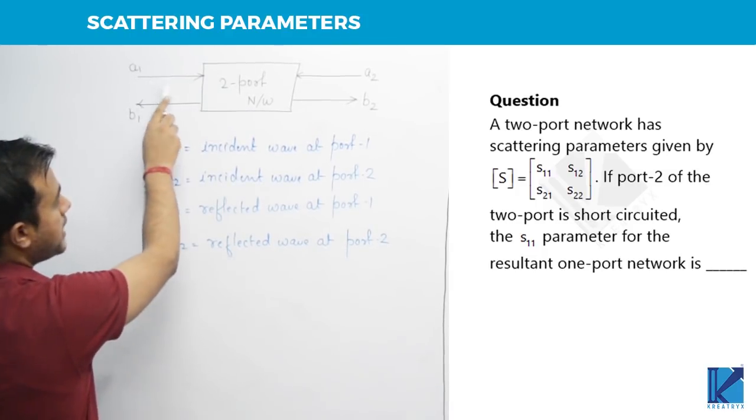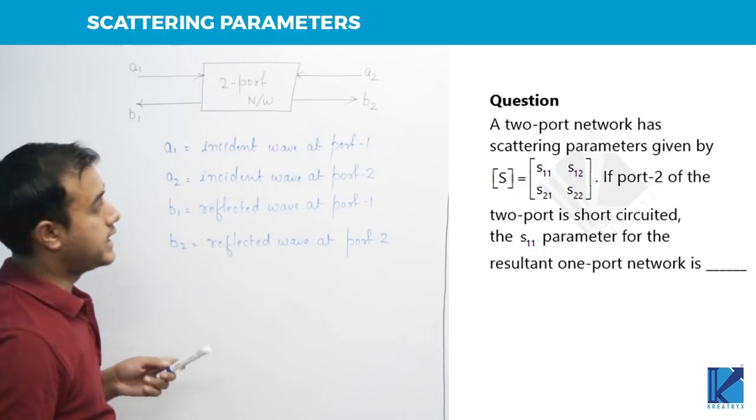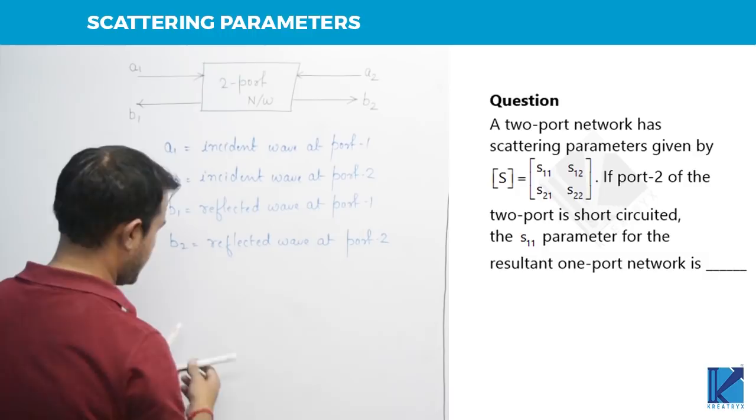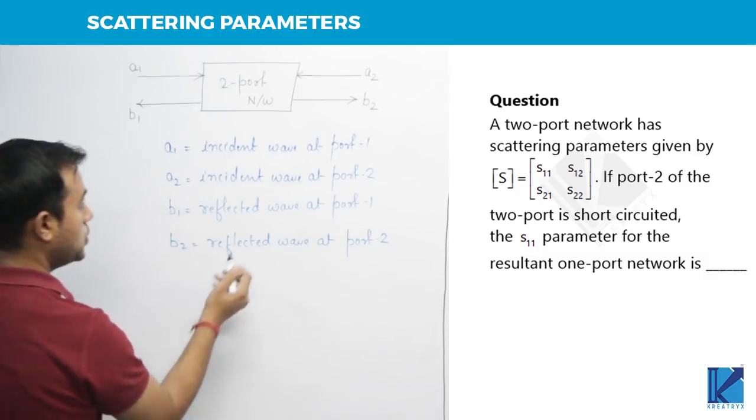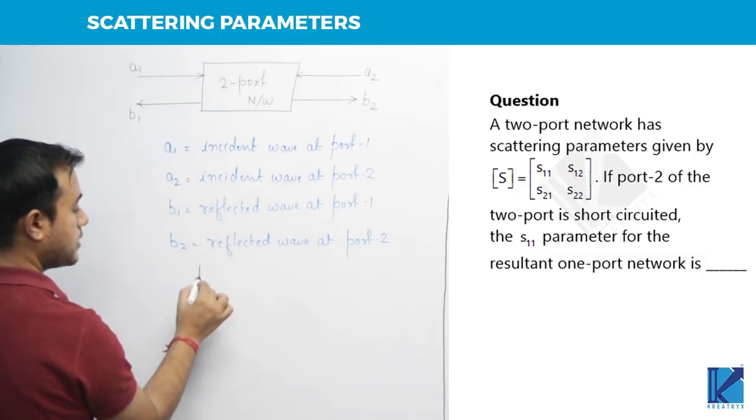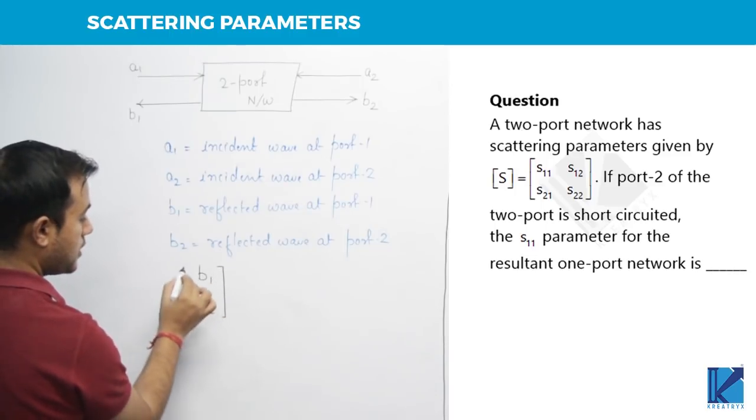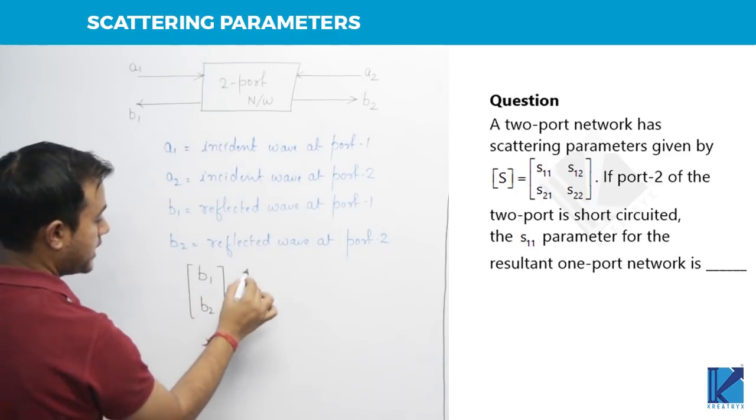Now what happens here is, when we incident some energy at any port of the network, some energy will get reflected and some will get transmitted. So now, how do we relate these? We relate it like this. B1, B2 is basically written something like this.